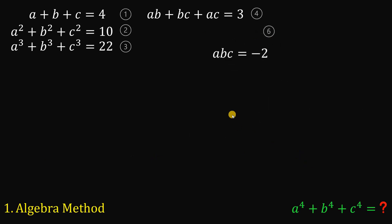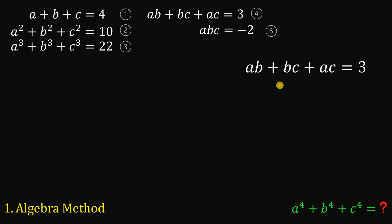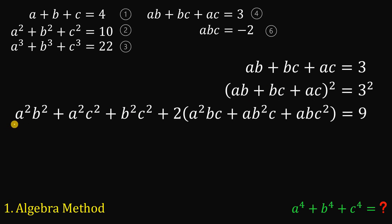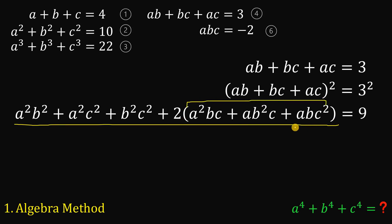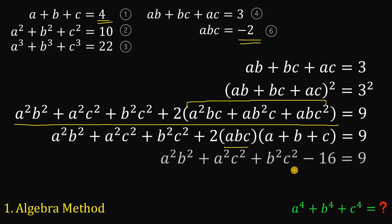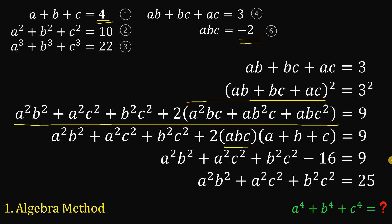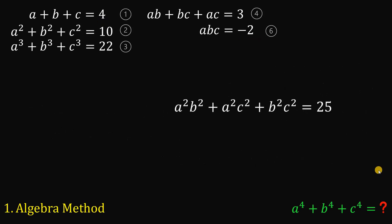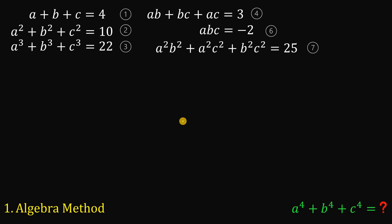We now have equations one, two, three, four, and six. Next, let's take equation four and square it. Focusing on one part of the expansion, we can factor it as abc times (a plus b plus c). We know abc equals negative 2 and a plus b plus c equals 4, so 2 times (negative 2 times 4) equals negative 16. Therefore, a squared b squared plus a squared c squared plus b squared c squared equals 25 after adding 16 to both sides. We'll call this equation seven.